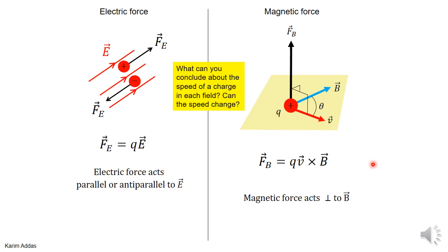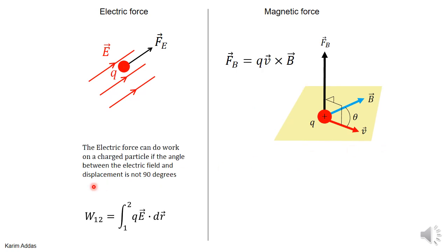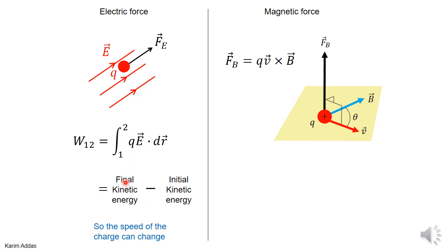That has a certain consequence. What can you conclude about the speed of a charged particle in an electric field versus the speed of a charged particle in a magnetic field — can the speed change? If you look at the work done on a charge in an electric field, the work is the integral of the force dotted into the displacement. If the direction of the force is in the same direction as the motion, the dot product will be non-zero, meaning the final kinetic energy minus the initial kinetic energy will be non-zero — that's the work-kinetic energy theorem. So the speed of the charge can change.